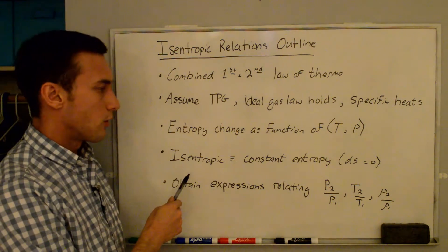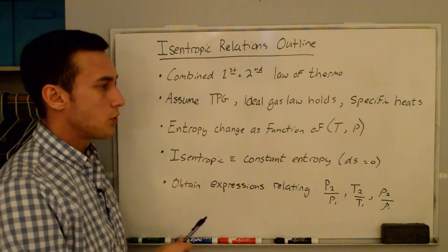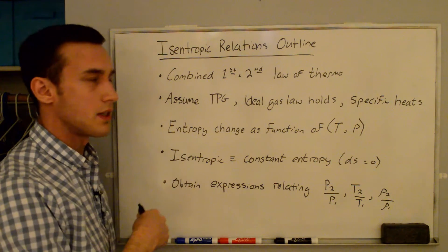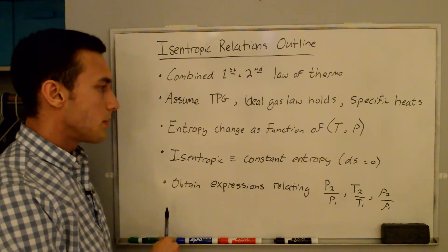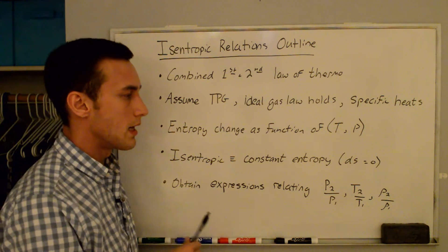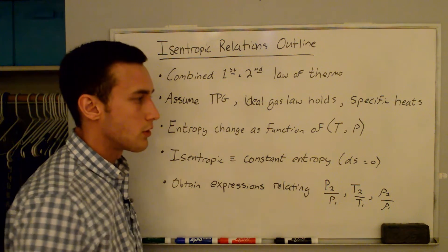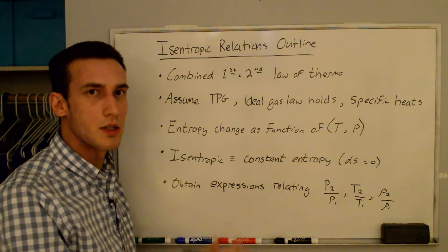For the isentropic relations, isentropic means that we have constant entropy, so ds is equal to zero, so we'll set the equations equal to zero. And we'll obtain expressions relating the pressure ratios, temperature ratios, and density ratios between two different states.